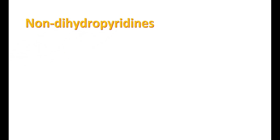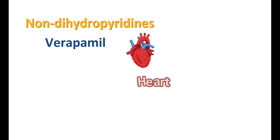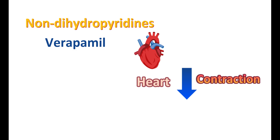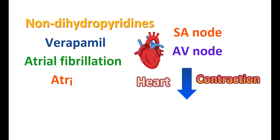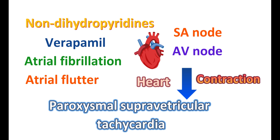Non-dihydropyridines have different clinical indications. Verapamil is selective for the heart, reducing cardiac contraction and transmission of impulses through the SA node and AV node. Therefore, verapamil can suppress cardiac activity and is used in the treatment of atrial fibrillation, atrial flutter, and paroxysmal supraventricular tachycardia (PSVT) — a sudden onset of tachycardia due to impulses originating above the ventricles. By reducing AV nodal conduction, verapamil can control PSVT.